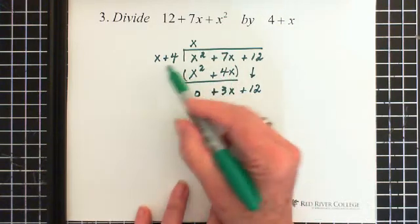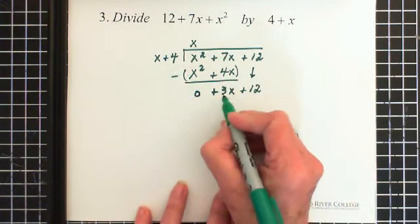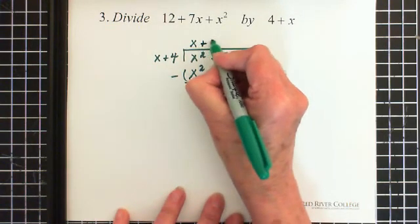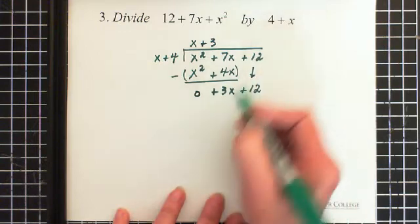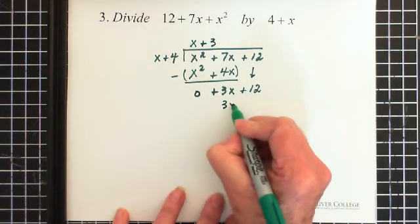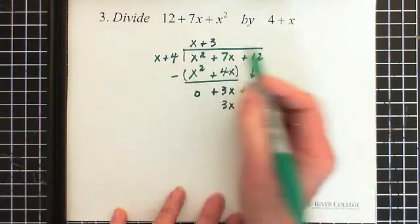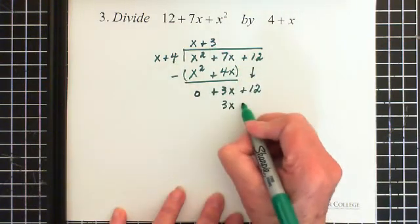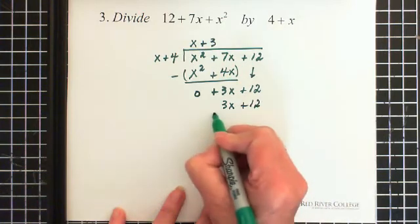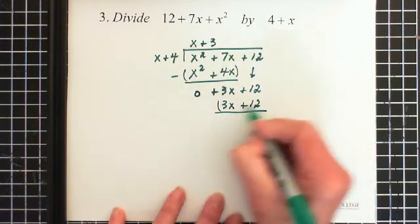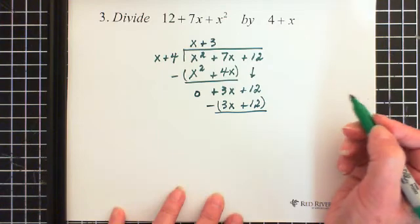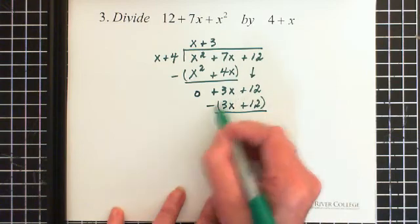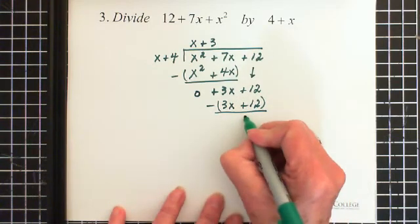Now we ask ourselves, what do we multiply by x to get a plus 3x? And that would be a plus 3. 3 times x is 3x. And 3 times plus 4 is plus 12. Draw the line, brackets, we're going to subtract this thing. Now we have 3x plus 12 minus 3x plus 12. This has to be 0.